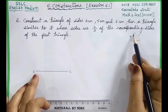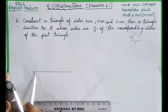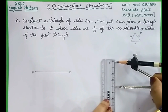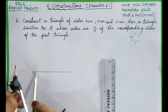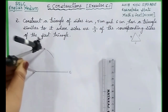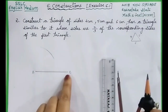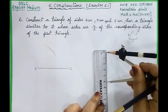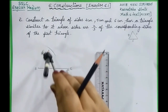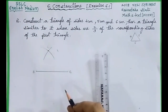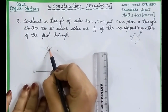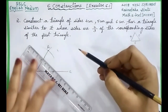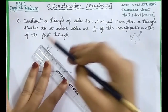From B, draw an arc with B as center and radius equal to 4 centimeter. Then with C as center, draw an arc of 5 centimeter and cut the previous arc. The point of intersection of these arcs — let us name it as A. Now join AB and then join AC. This is our triangle.